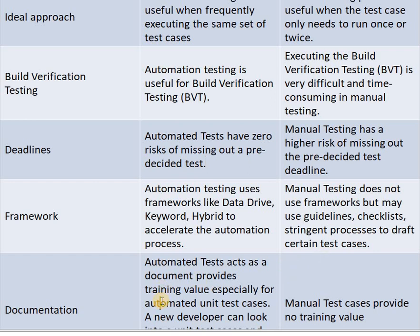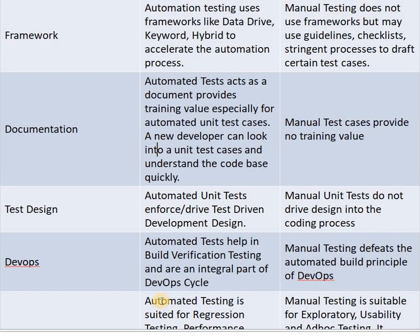Next parameter is documentation. Automated tests act as a document providing training value, especially for automated unit test cases. A new developer can look into unit test cases and understand the code base quickly, whereas manual test cases provide no training value.